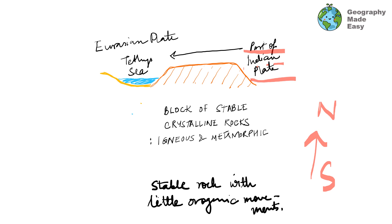The peninsular plateau has not received much tectonic movement, and hence we have not seen much mountain building or orogenic features in this area. However, certain parts of the peninsular plateau have seen some faulting, especially in the western part. There are block faults which form very interesting step-like features, which we know as the Deccan Trap in the northwestern part of the Deccan Plateau.